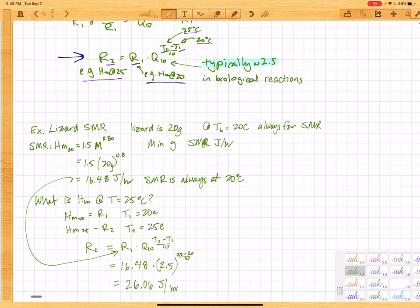So HM, so the metabolic rate at 25, 5 degrees raised in temperature is quite a bit higher than the metabolic rate at 20. It's not quite double, but it's like 1.6 times higher, so quite a bit higher.